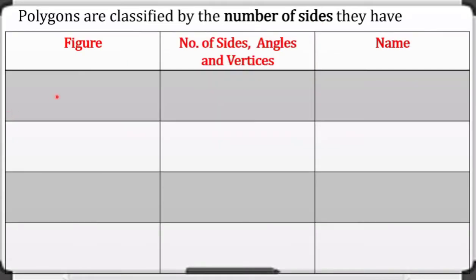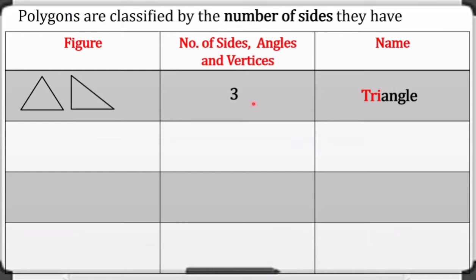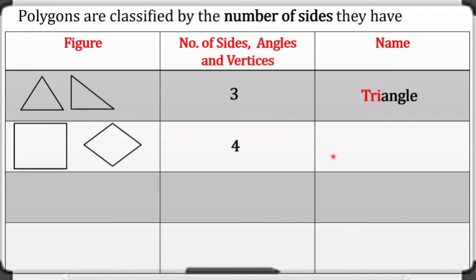The first polygon we call a triangle because it has three sides, three angles, and three vertices. Next, this one has four sides, four angles, and four vertices, and we call this polygon a quadrilateral — 'quad' means four.